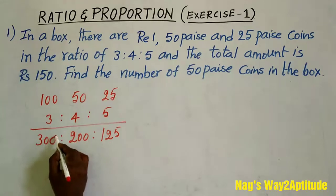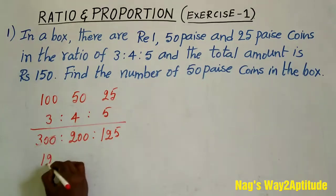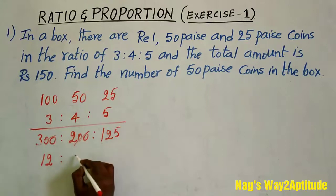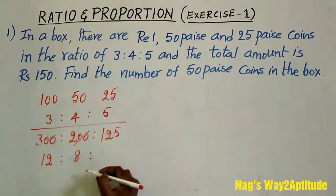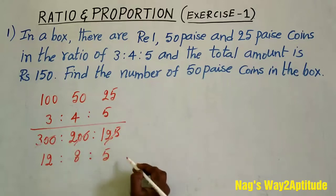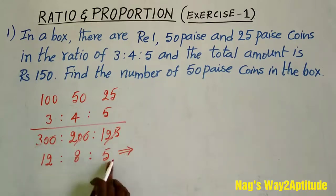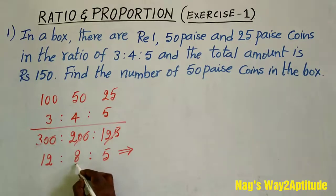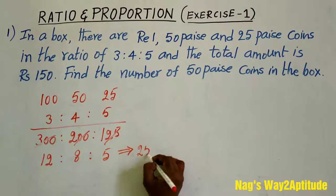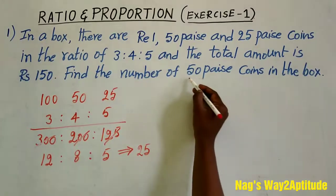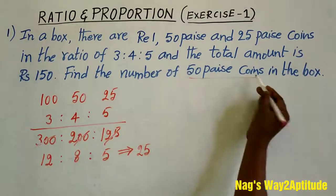25 goes into 300 twelve times, 25 goes into 200 eight times, and 25 goes into 125 five times. Now you add these three terms: 12 plus 8 is 20, and 20 plus 5 is 25. Now we need to find the number of 50 paisa coins.